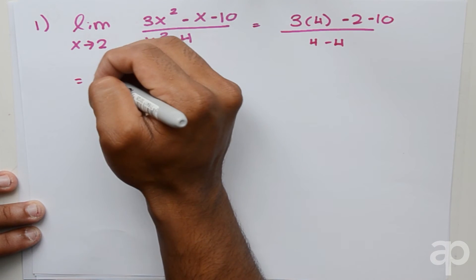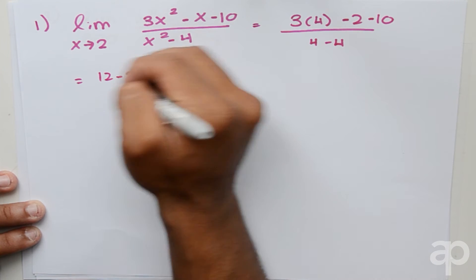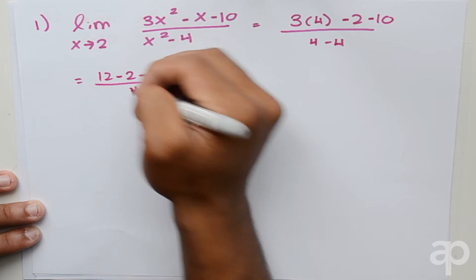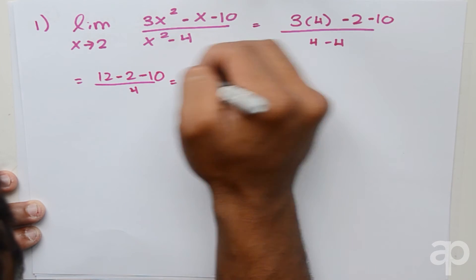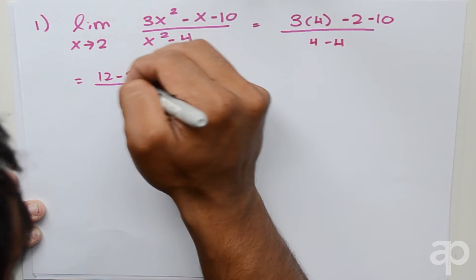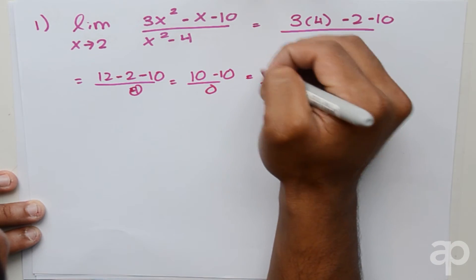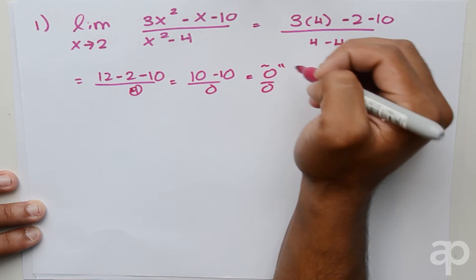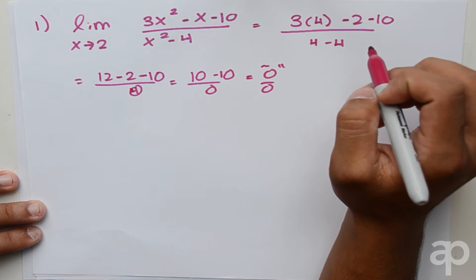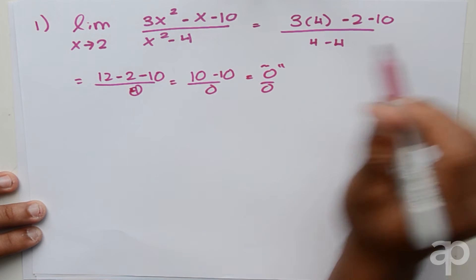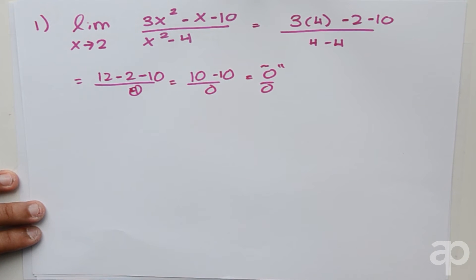Simplifying gives us 12 minus 2 minus 10 over 0, which equals 0 over 0. This 0 over 0 is known as the indeterminate form, and what this signifies is that the expression must be further simplified in order to solve the limit.